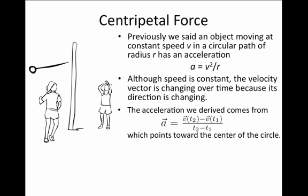In the case of constant speed but a velocity vector moving around in a circle, the acceleration vector was derived to equal in magnitude v squared over r and the acceleration vector points back toward the center of the circle.